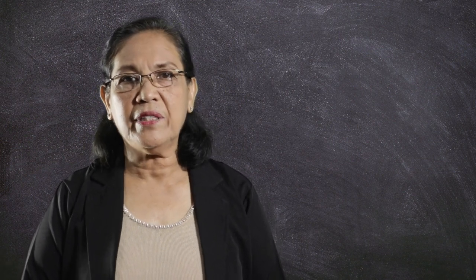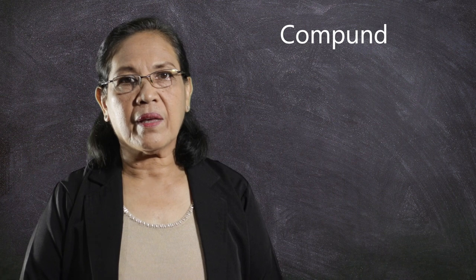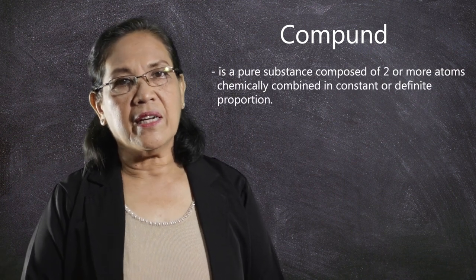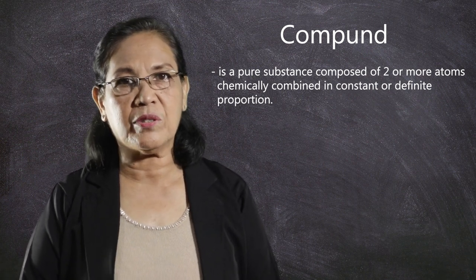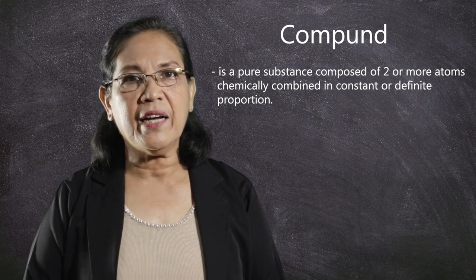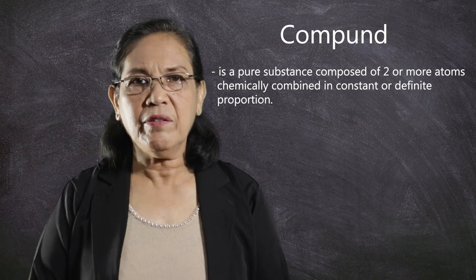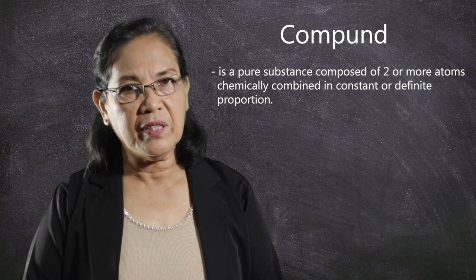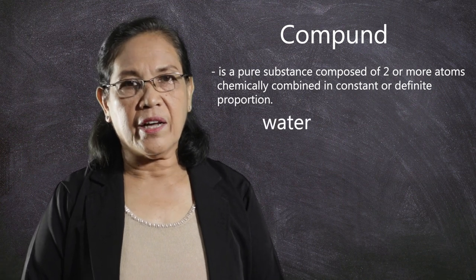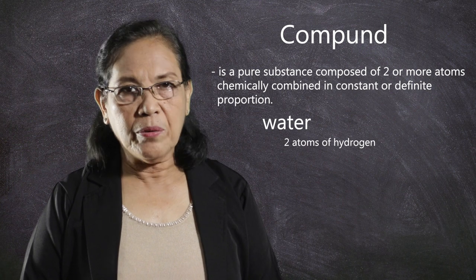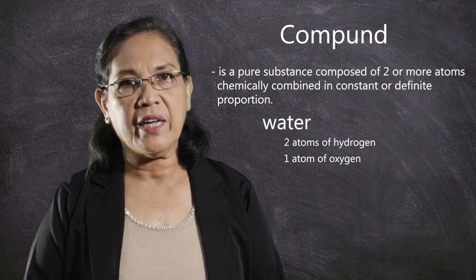Let's go to the other kind of pure substance, that is the compound. The compound is a pure substance that is composed of two or more kinds of atoms, and they are chemically combined in constant and definite proportion, meaning that you cannot change the component of the compound. For example, if you have water, the component of water is two atoms of hydrogen and one atom of oxygen, thus the formula is H2O. The compounds are represented by chemical formulas.